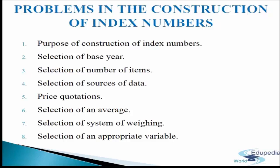Problem 7: Selection of system of weighing. It refers to assigning relative importance to different items included in the construction of index numbers, because some items are more important and some are less important. There are two types of indices — unweighted and weighted. In unweighted indices, all commodities are of equal importance. In weighted indices, weights are assigned to different items based on their importance. The weights may be quantity weights, where commodities are given importance according to the quantity produced or consumed, or value weights, where commodities are given importance according to the expenditure incurred on them. Weights must be revised regularly.